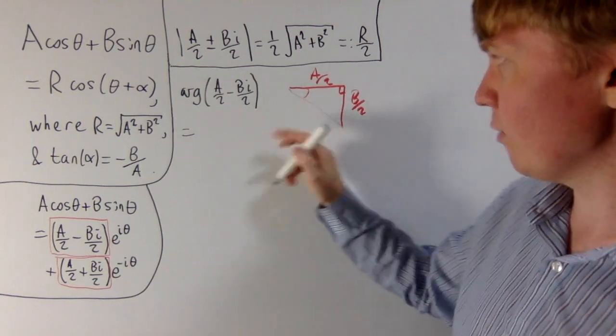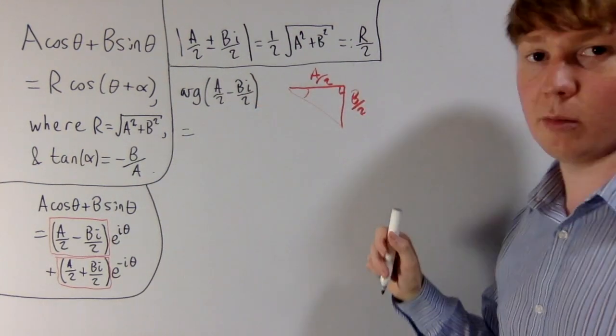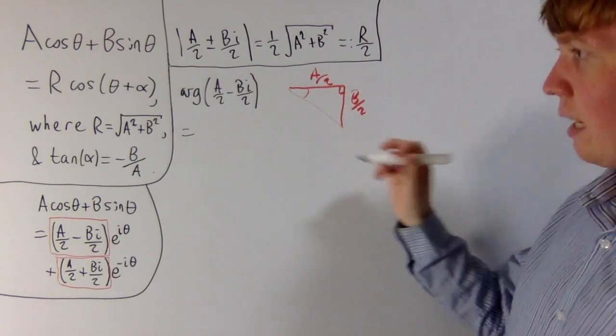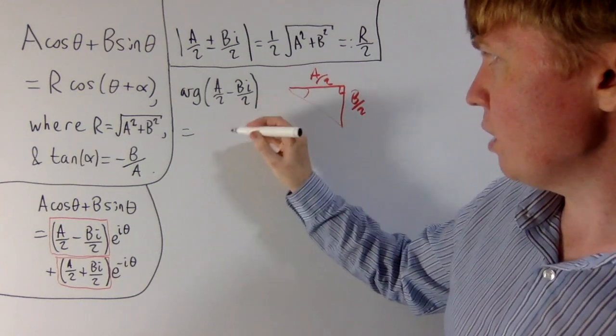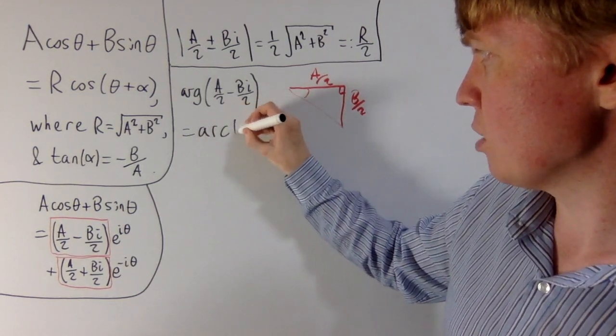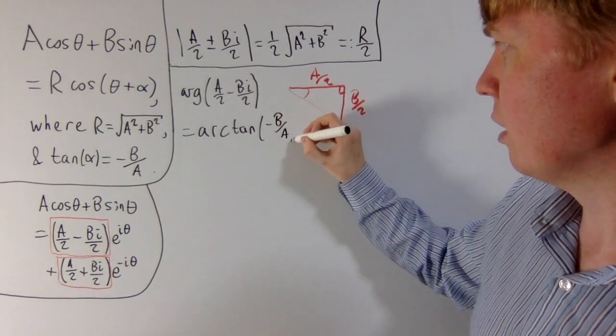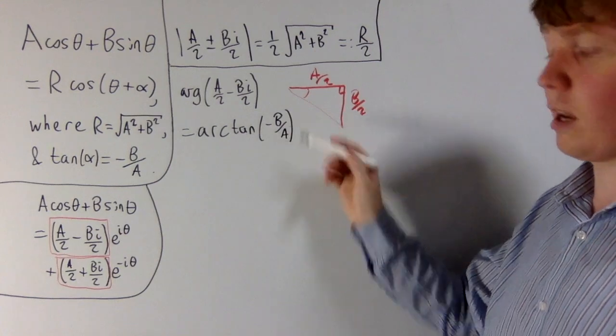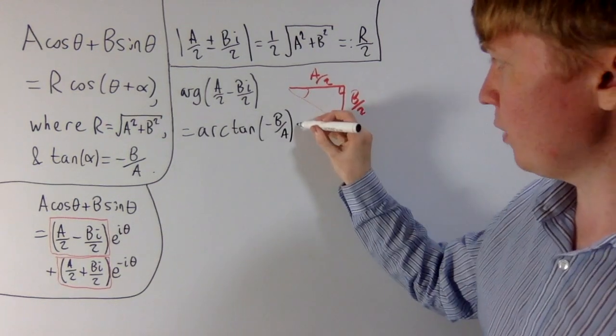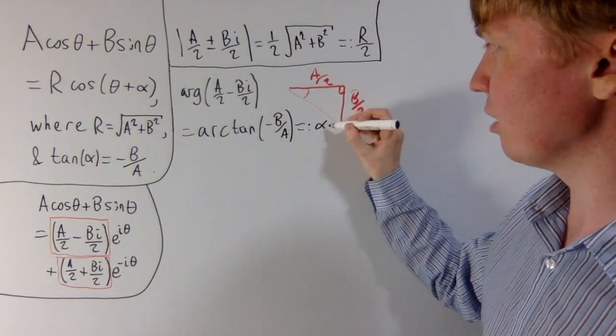By convention, when the imaginary part of our number is negative, we're going to have a negative angle. So the argument of A over 2 minus B i over 2, I'm going to write this as arctan of minus B over A, which is equivalent to minus arctan of B over A. And let's define this to be our angle alpha now.